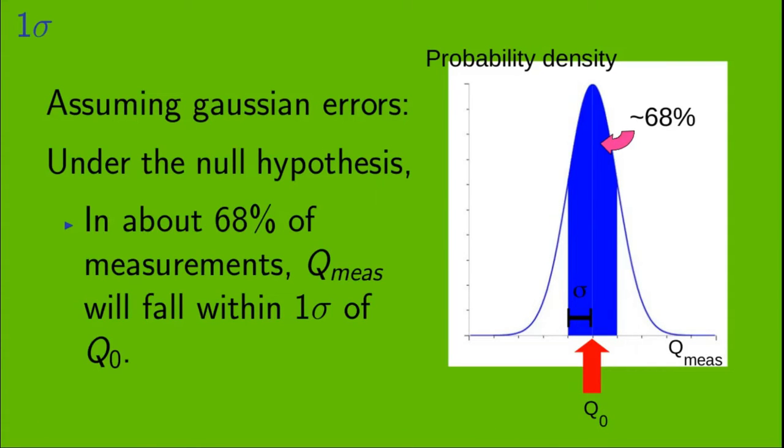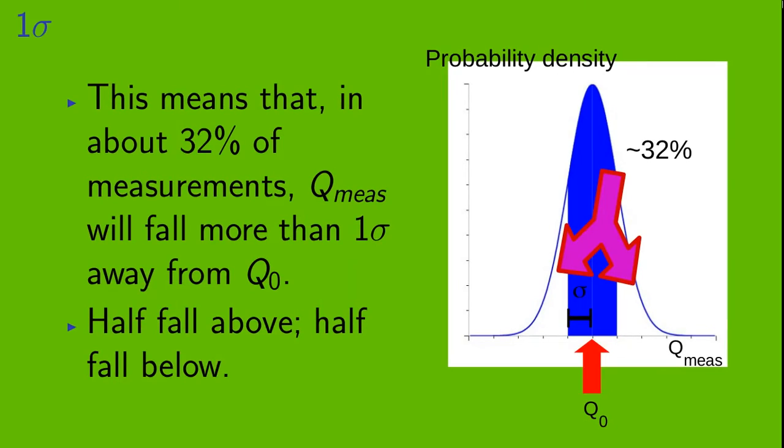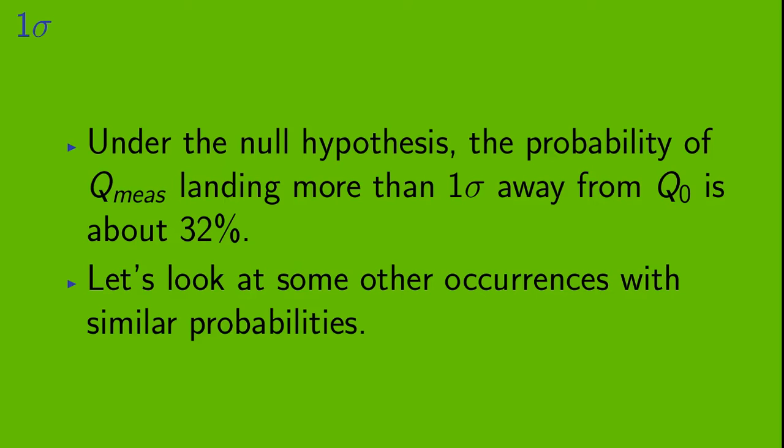Now, assuming Gaussian errors, under the null hypothesis, in about 68% of measurements, q measured will fall within 1 sigma of q0. So here, within the blue band. Now, this also means that in about 32% of measurements, q measured will fall more than 1 sigma away from q0. Half of the time, it will fall above the blue band, and half the time, it will fall below. Okay, so under the null hypothesis, the probability of q measured landing more than 1 sigma away from q0 is about 32%.